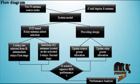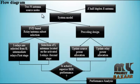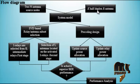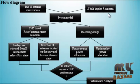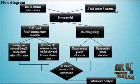Let us discuss about the flow diagram of the project. In this flow diagram, the system model has two N-antenna source nodes. The system model is connected between the two N-antenna source nodes and K-hop full-duplex R-antenna relays.